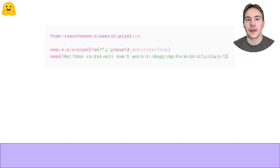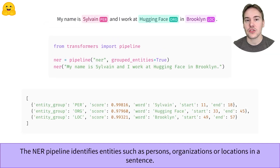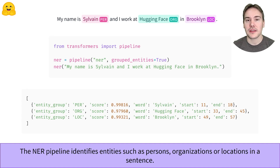Another task Transformers models can perform is to classify each word in a sentence instead of the sentence as a whole. One example of this is named entity recognition, which is the task of identifying entities such as persons, organizations, or locations in a sentence. Here the model correctly finds a person 'Sylvain', the organization 'Hugging Face', as well as a location within the input text. The group_entities argument is used to make the pipeline group together different words linked to the same entity, such as 'Hugging' and 'Face'.